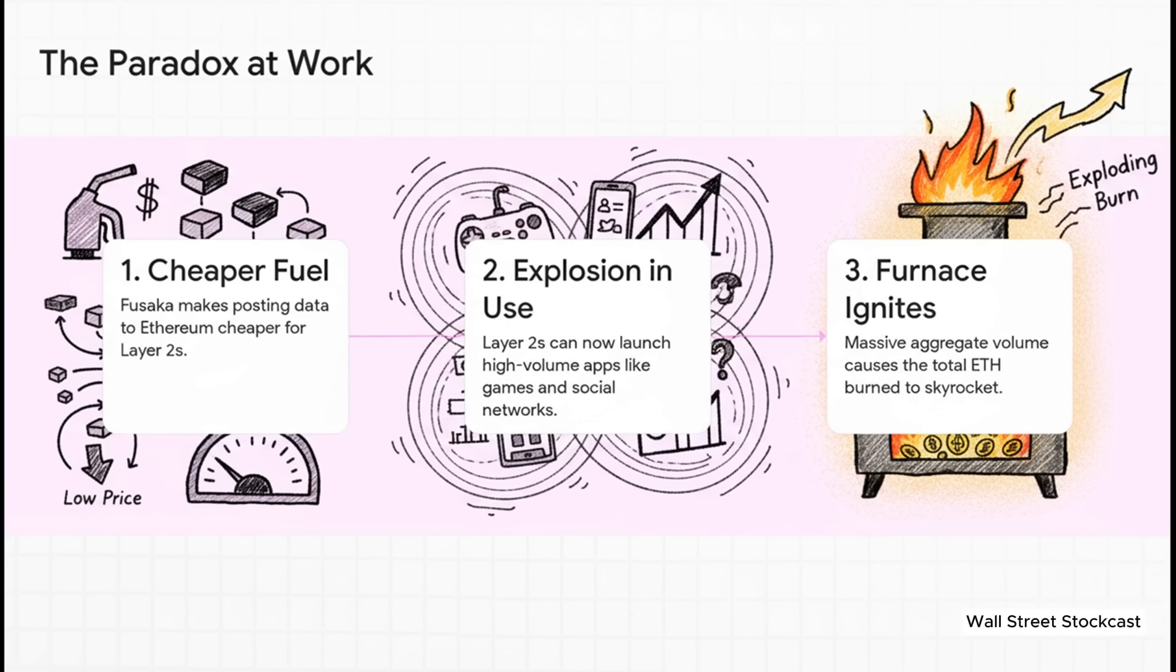So let's break down how this actually plays out on Ethereum. Step one, Fusaka makes the fuel, that data space on Ethereum, drastically cheaper for all those layer twos. Step two, this super cheap fuel unleashes a massive wave of new demand. All of a sudden, applications that were just too expensive before are now possible. Fully on chain games, decentralized social media, high frequency trading. And then, step three, while each individual transaction might have a smaller fee, the sheer colossal volume of transactions gets so big that the total amount of ETH being burned just explodes. The furnace is running hotter because the fuel got cheaper. Wild, right?